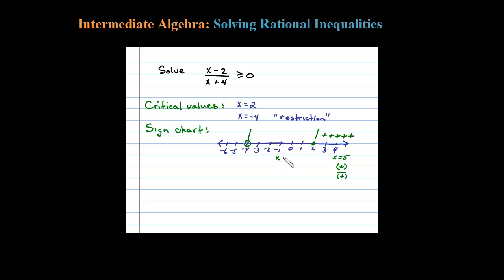Let's choose a test value in the middle region, say 0. Substituting 0 in for x, we have 0 minus 2, or a negative number in the numerator. In the denominator, 0 plus 4 is a positive number. A negative divided by a positive is negative.